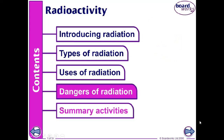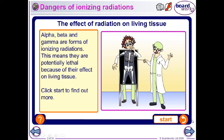Alpha, beta, and gamma radiation are what we call ionizing radiations. When they collide with atoms, they knock off electrons from those atoms, turning them from neutral atoms into positively charged ions. This can be problematic and lethal to us because of the effect these ions have on living tissues.